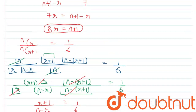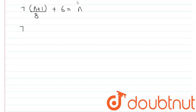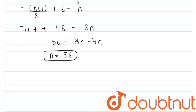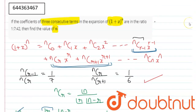Now from equation one: 8r = n+1, so r = (n+1)/8. Substituting into n = 7r+6: n = 7·(n+1)/8 + 6. Multiplying through by 8: 8n = 7n+7+48, giving 8n−7n = 55, so n = 55. That is our answer for this question.